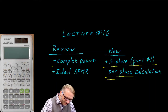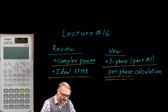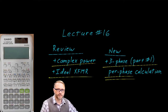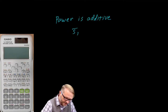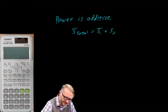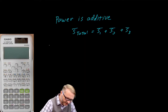Before we do, let's take a review of complex power with a couple of worked examples, and then a transformer with a couple of worked examples. Power is additive. Mathematically, we would say the total complex power is equal to the summation of the individual powers. For example, suppose you had three loads.